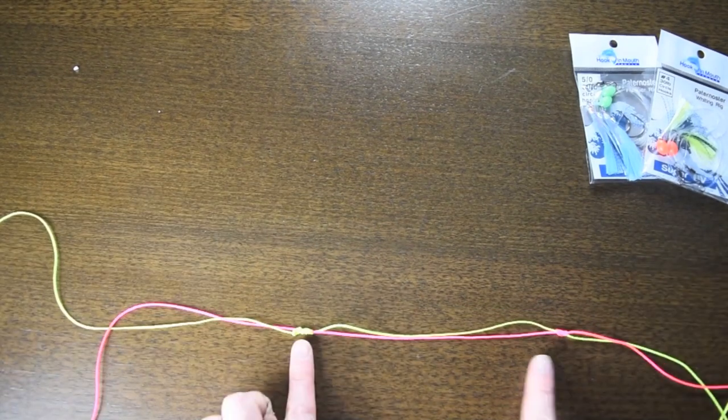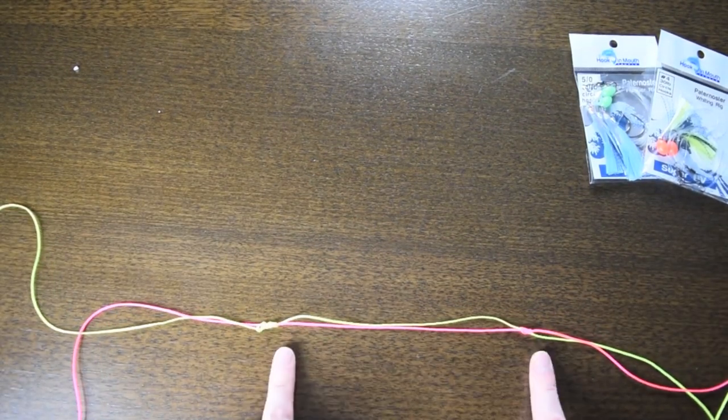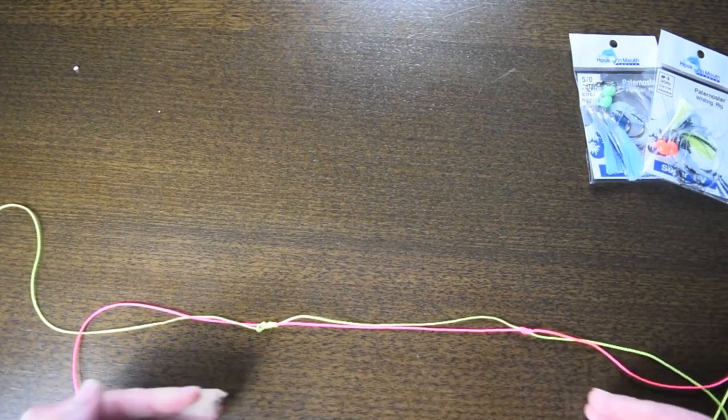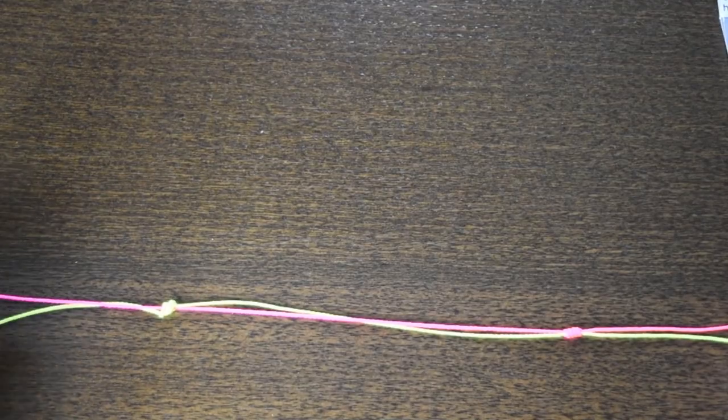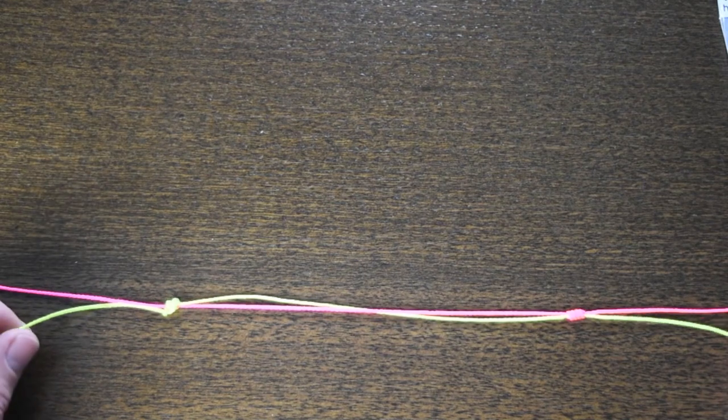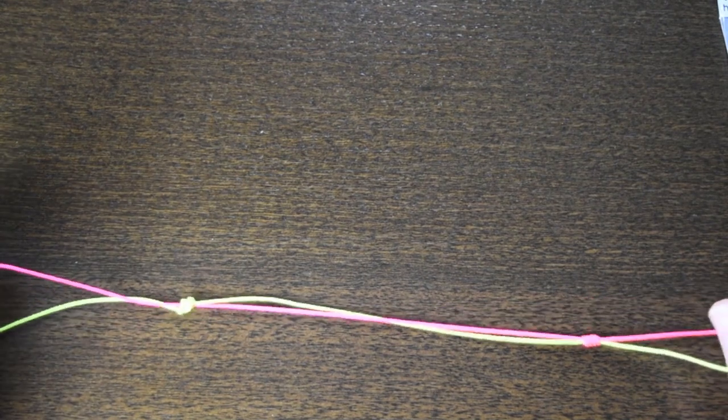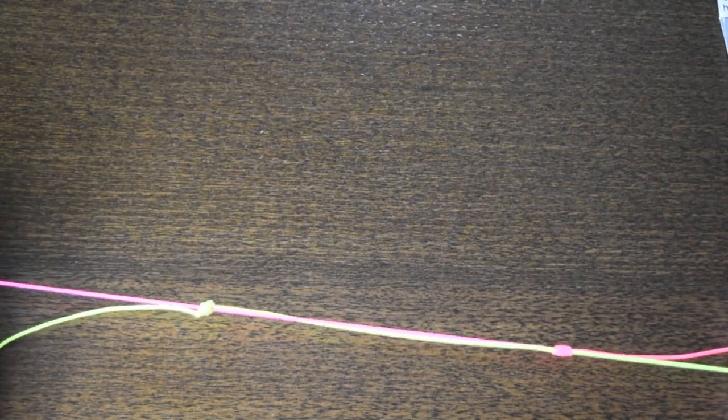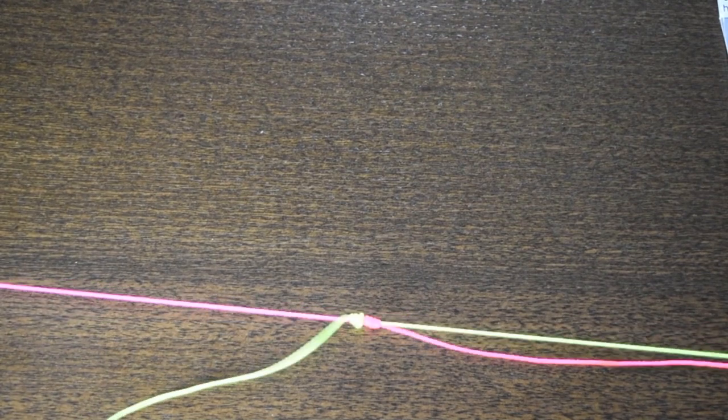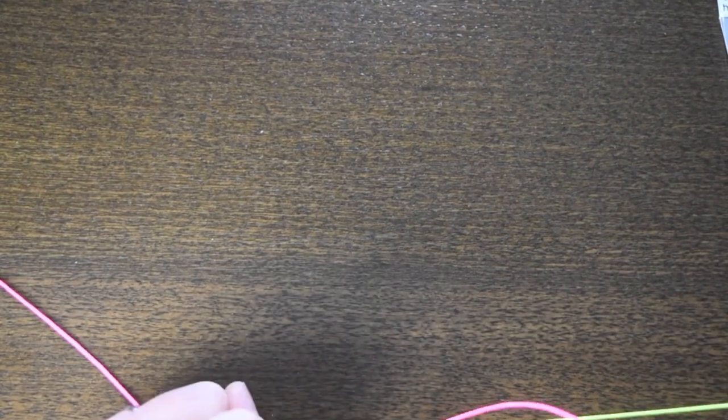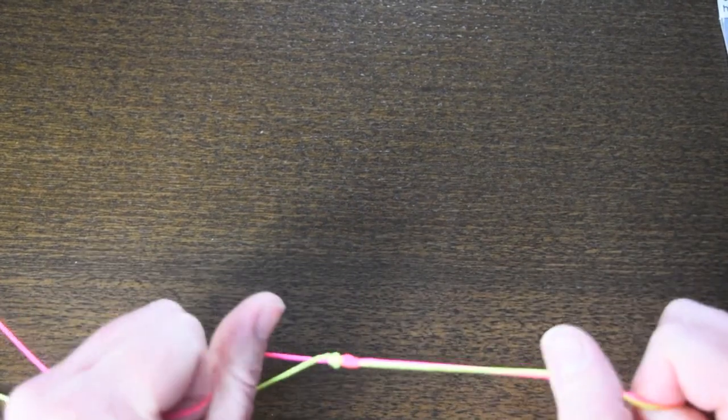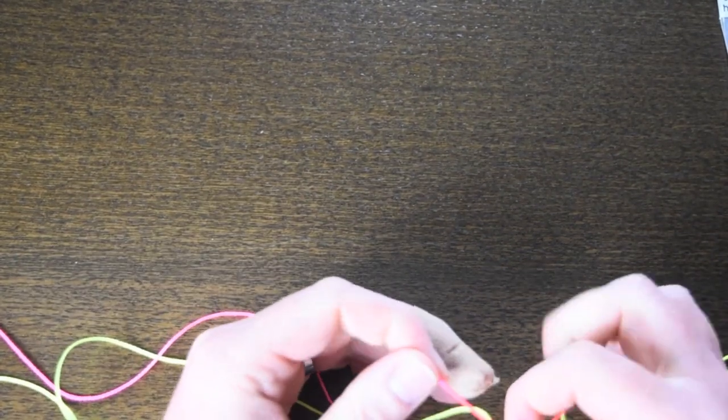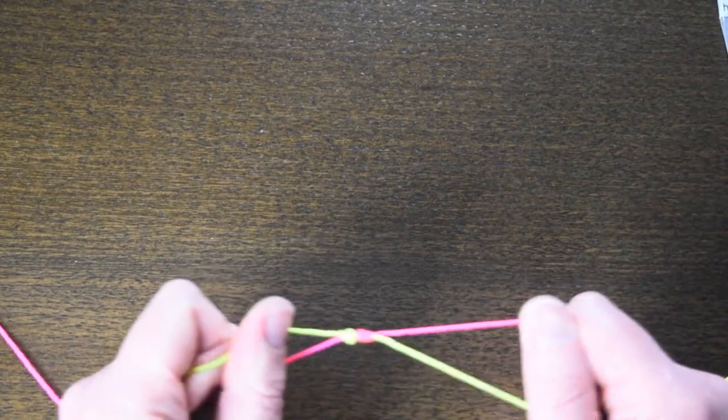Now obviously there's a gap between the two. What we want to do is bridge that gap and push these two knots together. We're now at the point where we just pull on the leader and the main line and that will slide the knots together. And then pull it tight. And that's basically it.